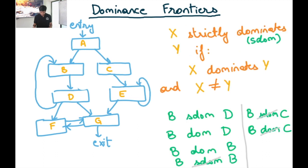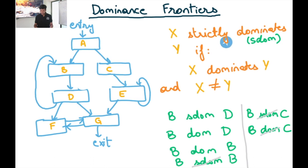We're going to see this with examples and with more intuitive explanation. First, I'm going to define the relation called SDOM, which means strictly dominates. X strictly dominates Y if X dominates Y and X is not equal to Y. So X strictly dominates Y means X dominates Y, but it does not strictly dominate itself. Recall that the dominator relation is reflexive but the strictly dominates relation is not reflexive.